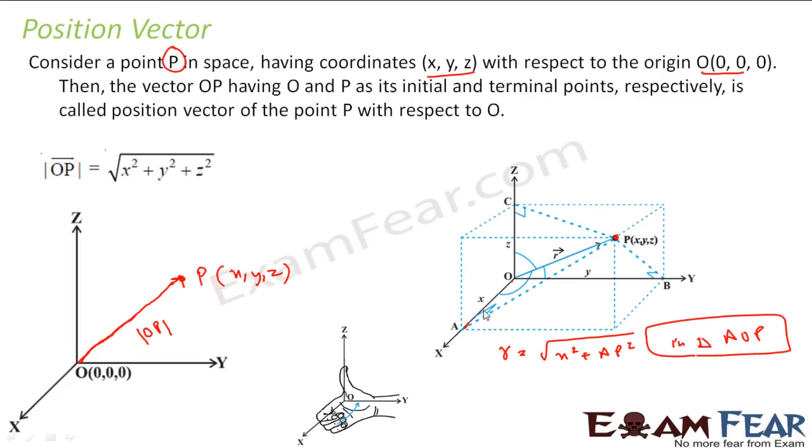So my R is nothing but root of x square plus this. Because you see my AOP is like this. A is here, P is here. My OP is R, AP is something which we do not know and OA is x. So we can say that R is x square plus AP square root. What is AP square?